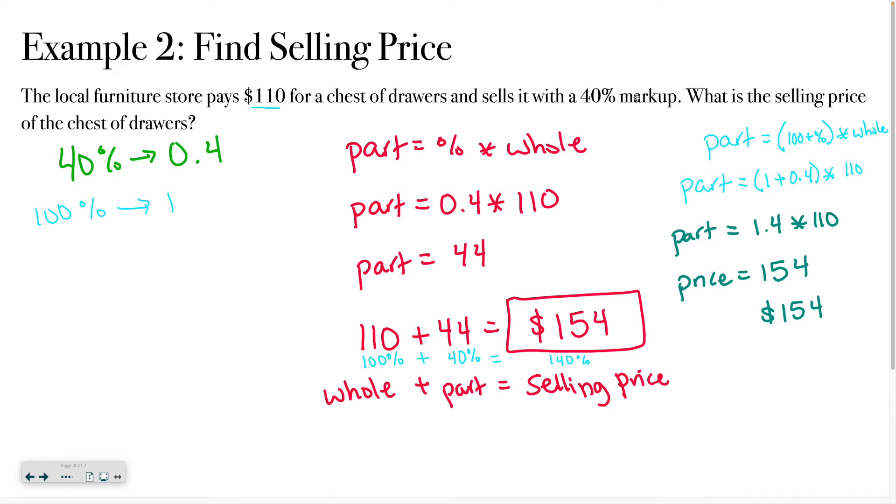So whenever you're doing a markup - so this would mean tax if you're trying to find the final price, or the tip if you're trying to find the price of your final bill - you could do this where you do one point and then whatever the percent was times the cost, and that will bring you directly to your final answer. So if that feels good to you, feel free to use it. If it feels a little bit shaky to you but you want to get better at using it and you want help, ask. I'm happy to help. It's just important that you pick what works for you.